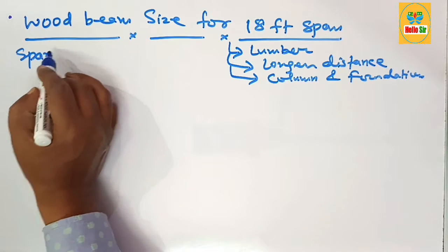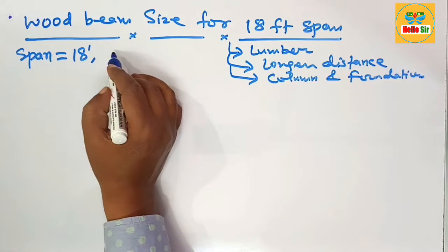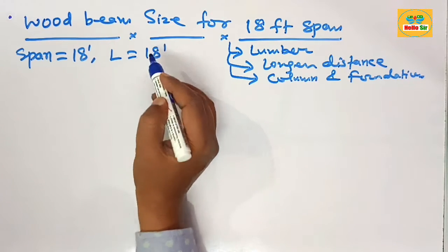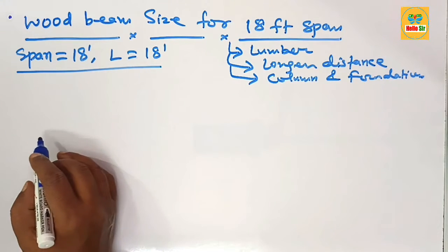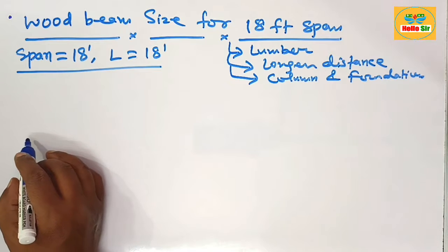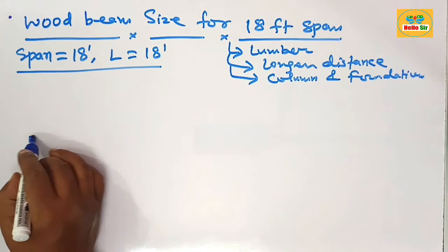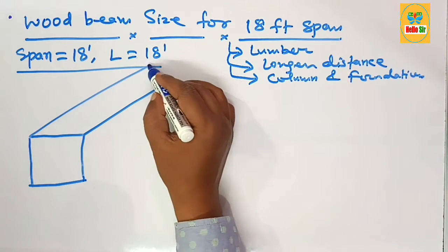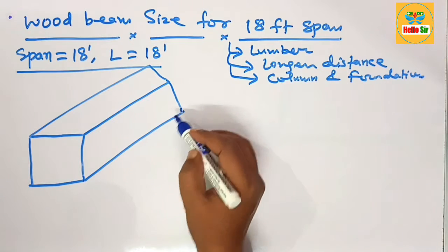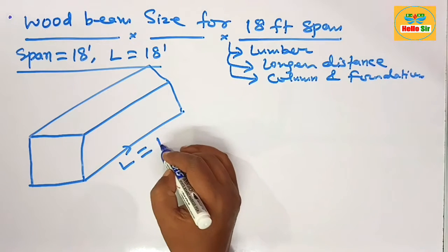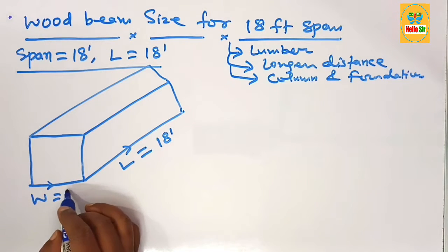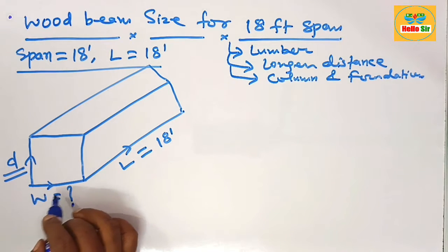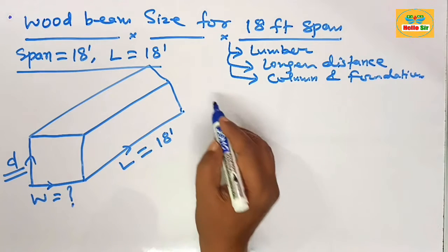The span length of the wood beam is 18 feet, meaning the length of beam required is about 18 feet. To understand this, let's make a rough diagram showing the length, width, and depth of the wood beam. The length is the given 18 feet, the width is the section we need to calculate, and the depth is the cross-sectional depth of the beam.